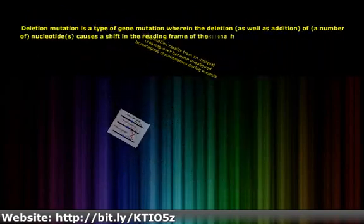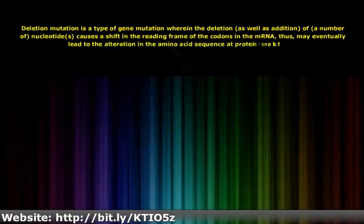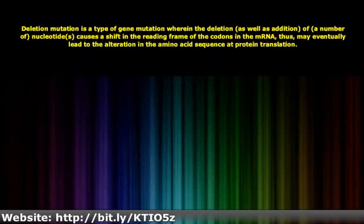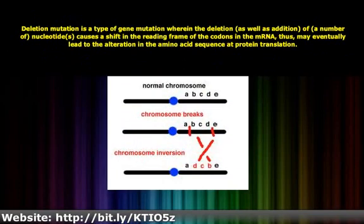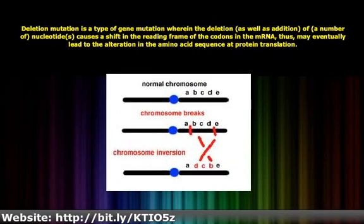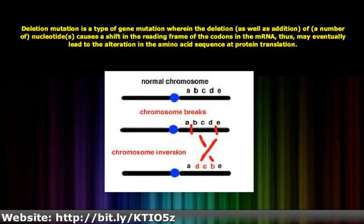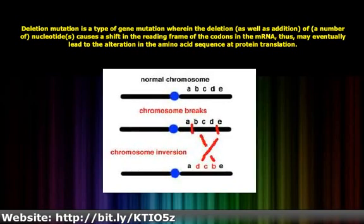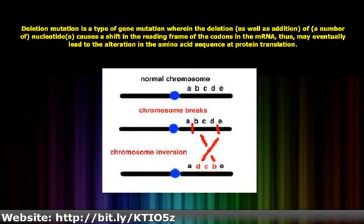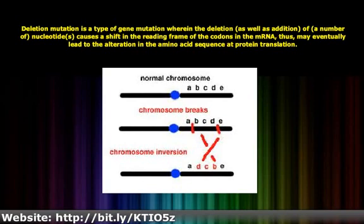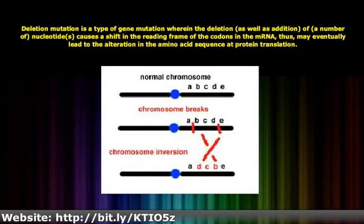Deletion mutation is a type of gene mutation wherein the deletion, as well as addition, of a number of nucleotides, causes a shift in the reading frame of the codons in the mRNA, thus may eventually lead to the alteration in the amino acid sequence at protein translation.